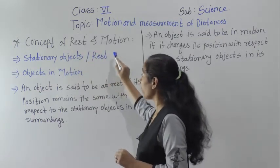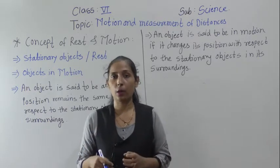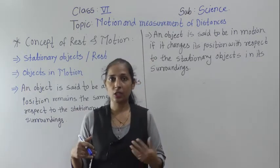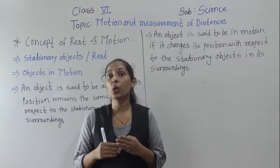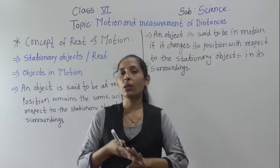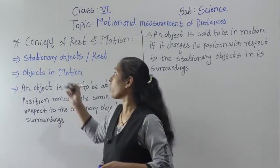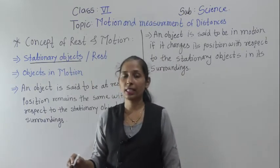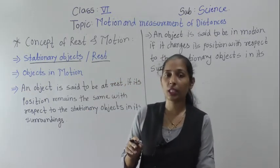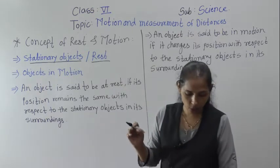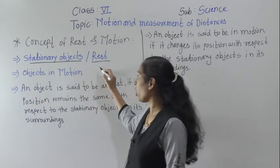So what is meant by rest and what is meant by motion — that we will discuss. In our surroundings, there are so many objects. In this room, there are windows, doors, and cupboards, and there is a blackboard. These are objects which cannot do movement; they are stable at one place and cannot move from one place to another. Objects that cannot do movement are called stationary objects, or we can say those objects are in rest.